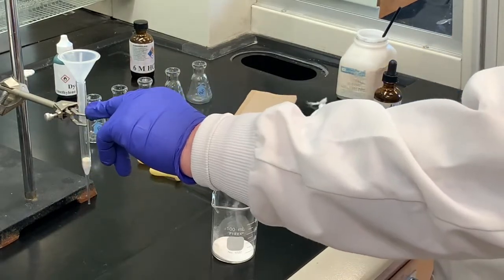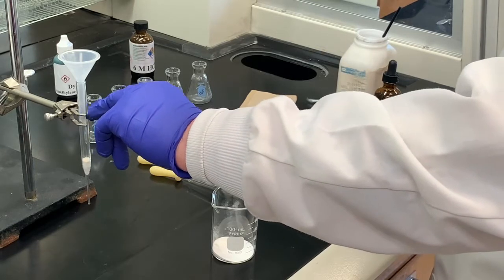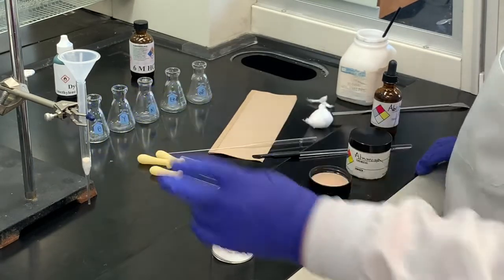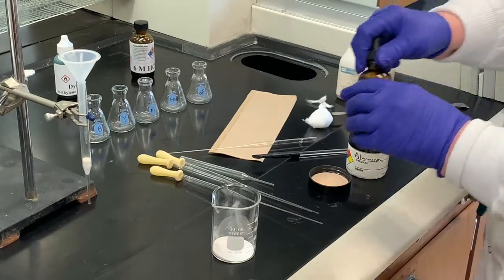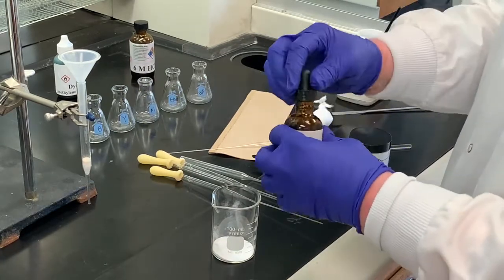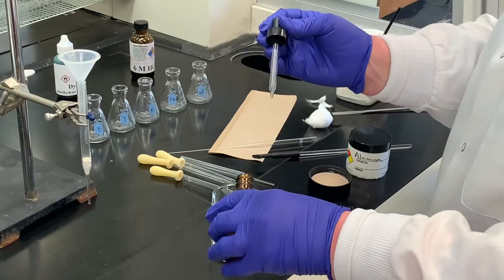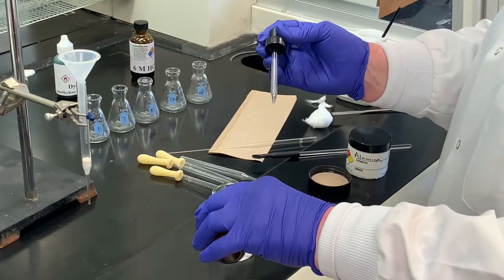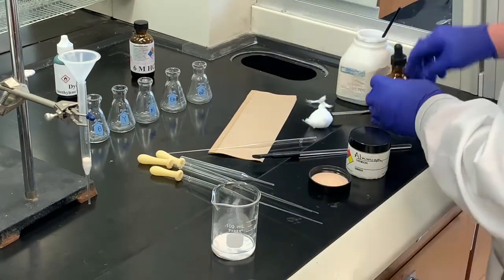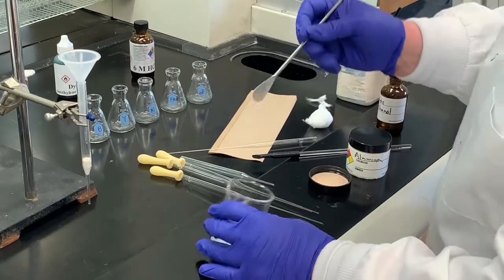We're not going to fill it all the way to the top. We'll probably go somewhere between half full to two thirds full. So I want to add the ethanol. And I just want to add enough that we can have a slurry. If it's too thin, I'll add a little bit more of the aluminum.